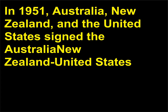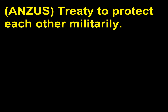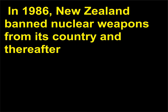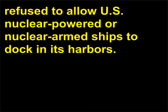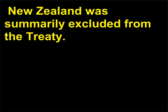What is ANZUS? In 1951, Australia, New Zealand, and the United States signed the Australia-New Zealand-United States (ANZUS) Treaty to protect each other militarily. In 1986, New Zealand banned nuclear weapons from its country and thereafter refused to allow U.S. nuclear-powered or nuclear-armed ships to dock in its harbors. New Zealand was summarily excluded from the treaty.